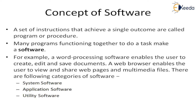It works toward a single outcome. Many programs functioning together to perform any task is called software. For example, word processing software enables the user to create, edit, and file different types of documents. A web browser enables the user to view or share webpages and multimedia files.